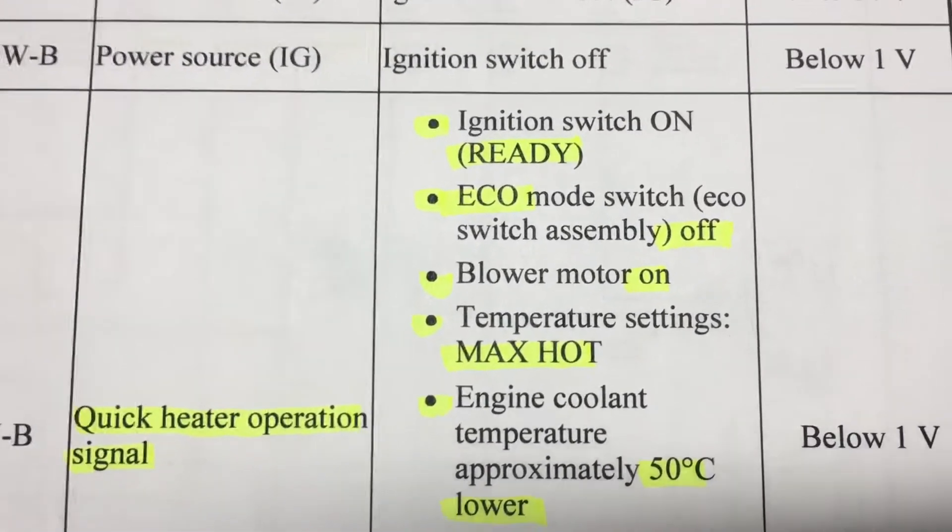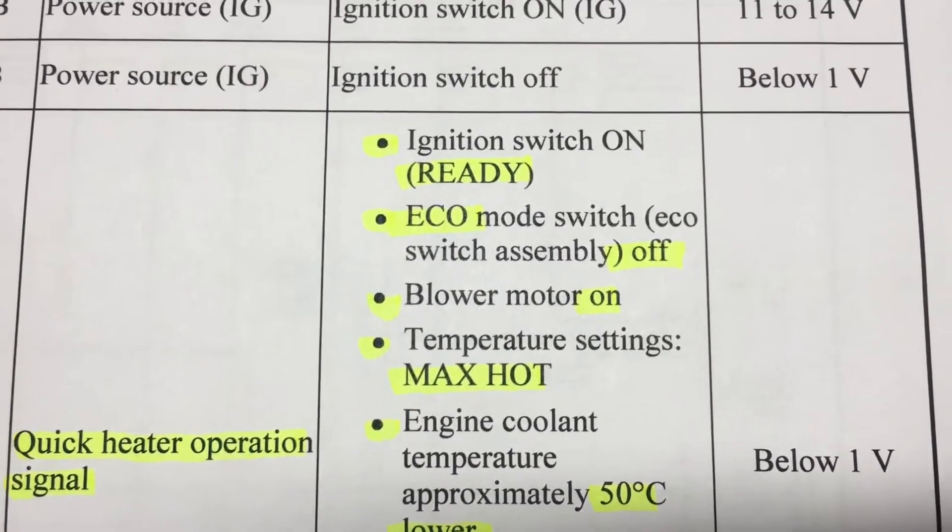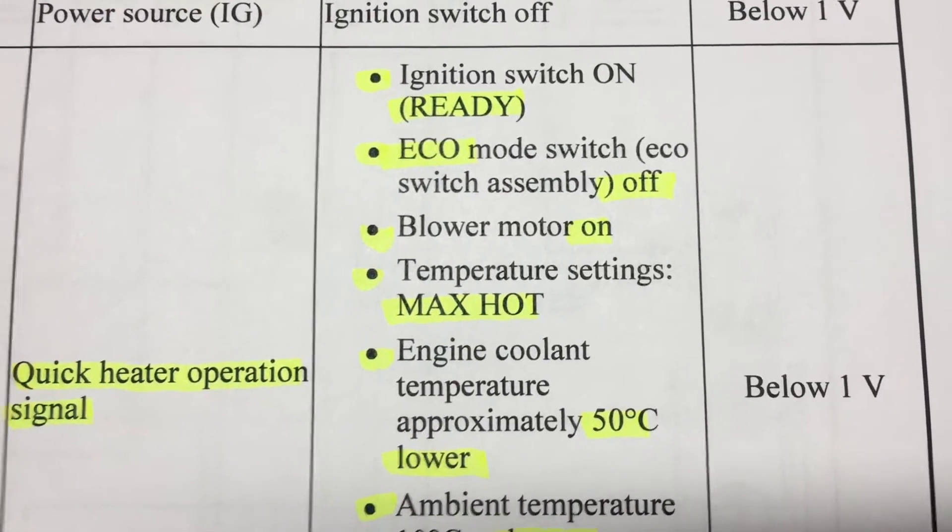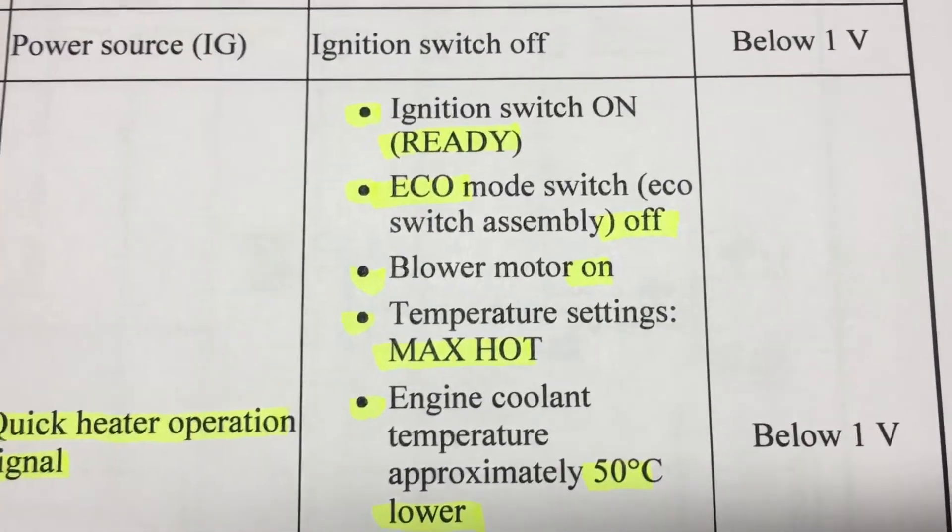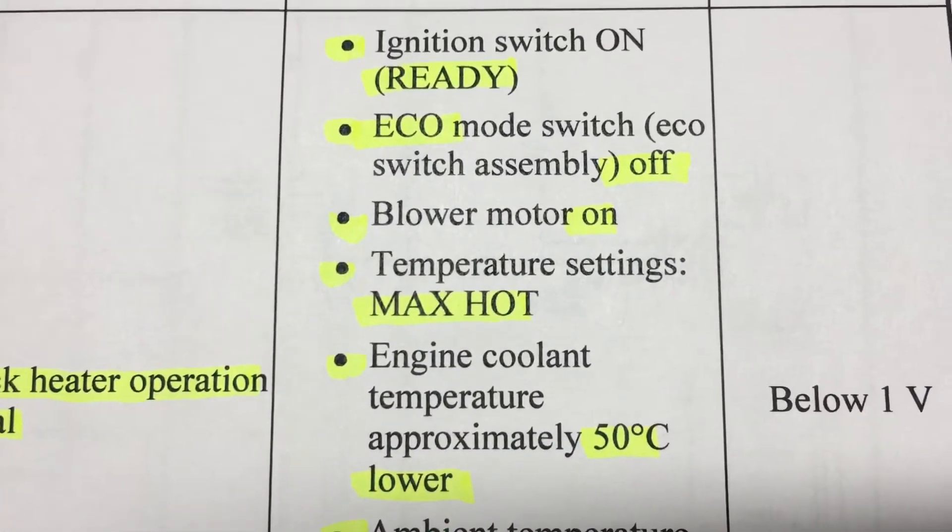Here's the conditions: we have to have the ready light on, the car is powered up, it will not run itself off the auxiliary battery. The eco mode is off, which I always operate with it on because I'm a cheap bastard so I'll have to make sure I turn that off. The blower motor is not in the off position.